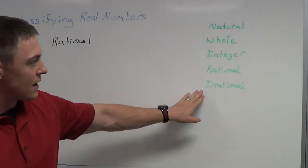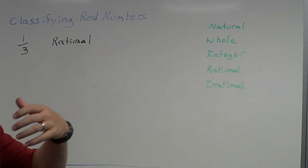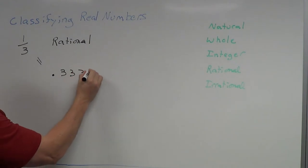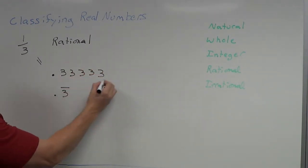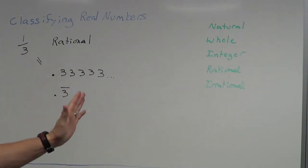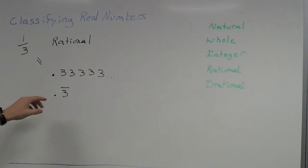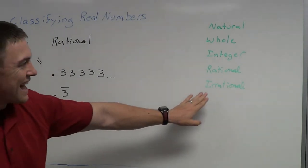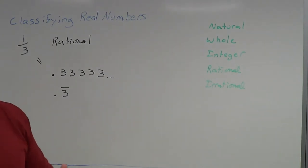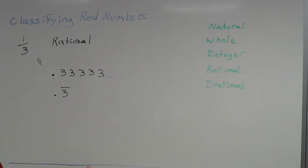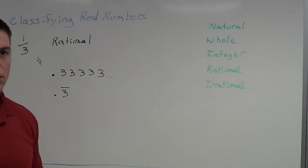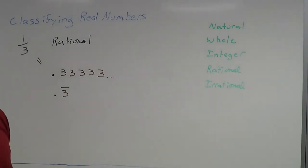Is one-third irrational? We've got to think — does it terminate, or are there repeating digits? One-third is also equal to 0.3333..., also known as 0.3 repeating. There is a pattern to one-third — if you take your calculator and divide one by three, it's just repeating threes. Since there is a pattern to this repetition, that means it is a rational number, not an irrational number. If there wasn't any sort of pattern, like pi, it would be irrational. So one-third is just a rational number — that's the only classification.